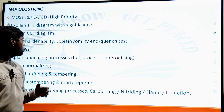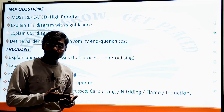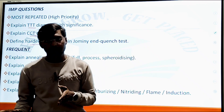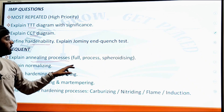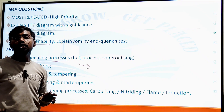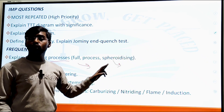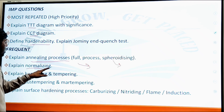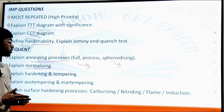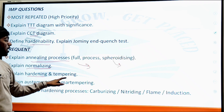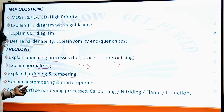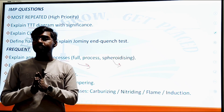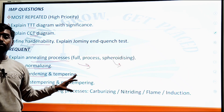The annealing process: when a material is heated, its crystal structure changes. You need to explain the full annealing process step by step, including how to draw it. After that, normalizing — also part of the heat treatment process — needs explanation. Then hardening and tempering: the difference and explanation between these processes is important.